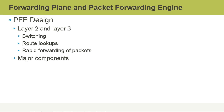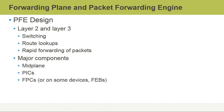Major components of the packet forwarding engine include the midplane or backplane, which is where the line cards plug in. The physical interface cards, or PICs, are the physical modules that house the interface ports. Each PIC is then plugged into a flexible PIC concentrator, or FPC — though on some devices PICs plug into forwarding engine boards, or FEBs. The FPCs themselves can house multiple PICs and are integral hardware components that connect PICs to other components and also contain shared memory.